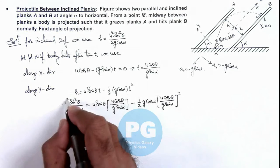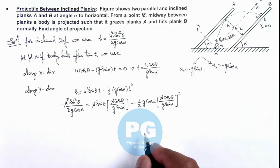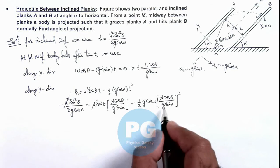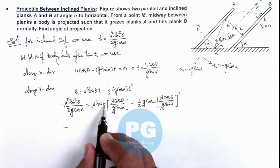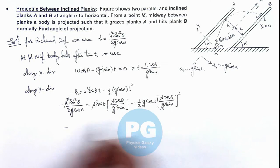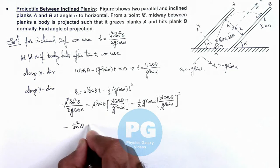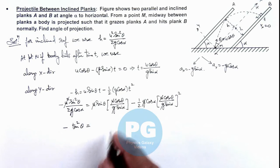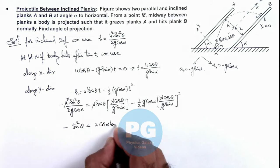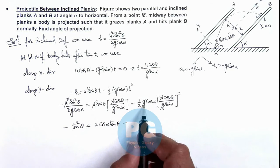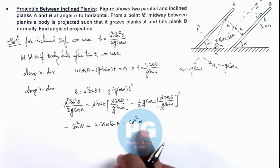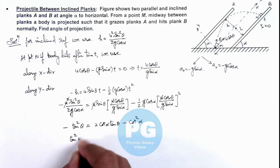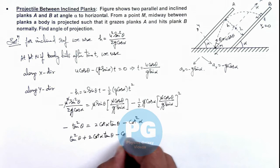Simplifying, we see that u² cancels throughout the equation, and g also cancels out. The relation becomes: minus sin(θ)·cos(θ) and taking cos²θ across gives minus tan²θ minus 2·cot(α)·tan(θ) plus cot²(α) equals zero. Rewriting this as a quadratic in tan(θ): tan²θ minus 2·cot(α)·tan(θ) minus cot²(α) equals zero.